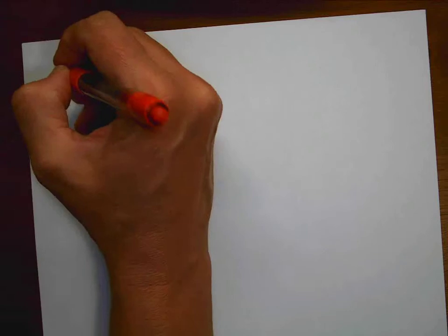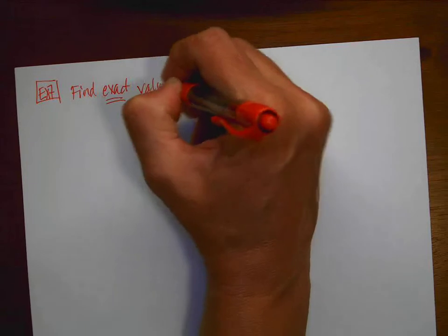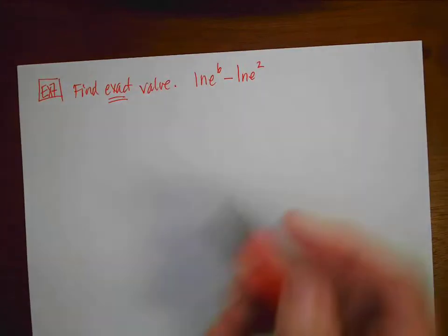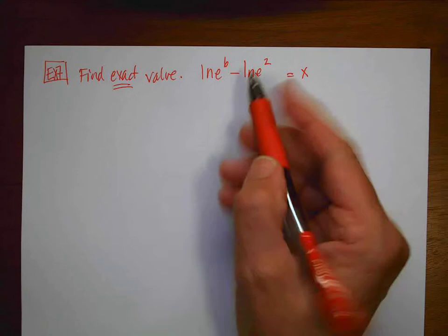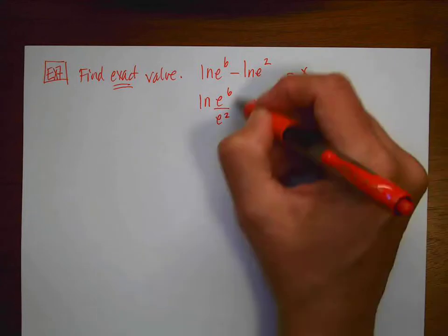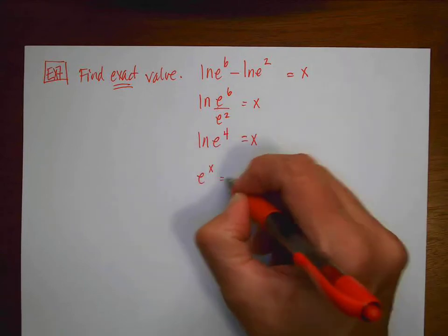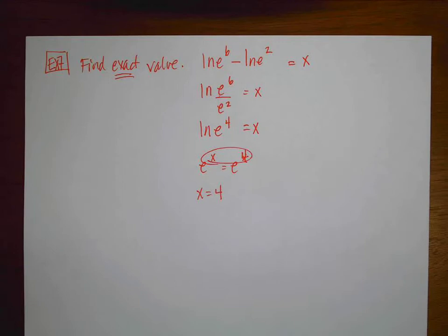Last example says find the exact value. We have the natural log of e⁶ minus the natural log of e². Set it equal to x and use properties first: this is the natural log of e⁶ divided by e² equals x, which simplifies to the natural log of e⁴ equals x. Now e to the x equals e to the fourth, so x equals 4. That's it for today — see you soon.